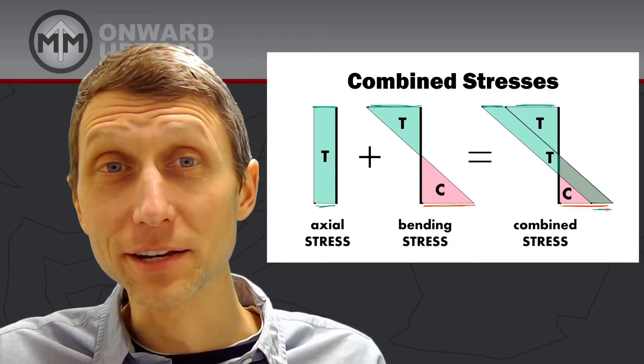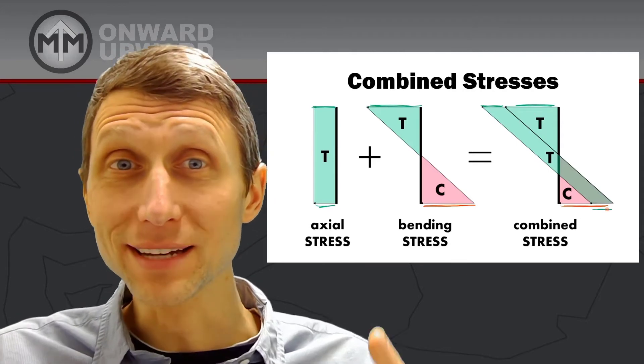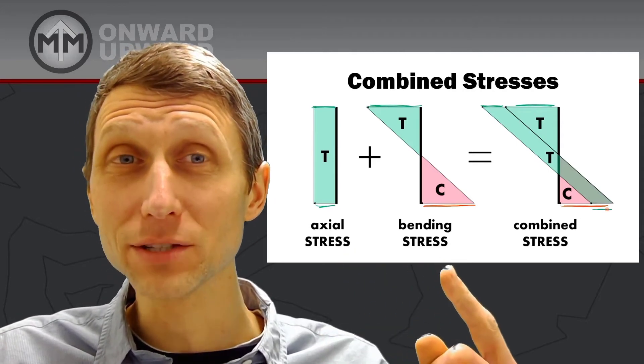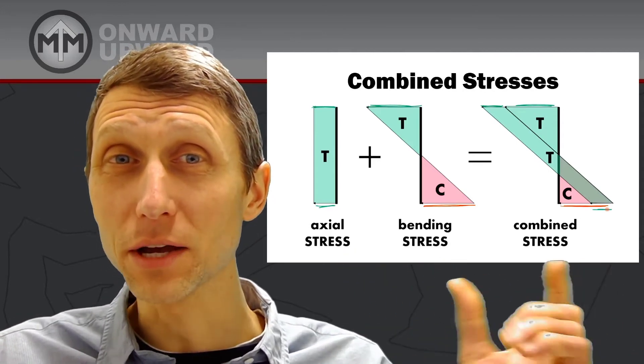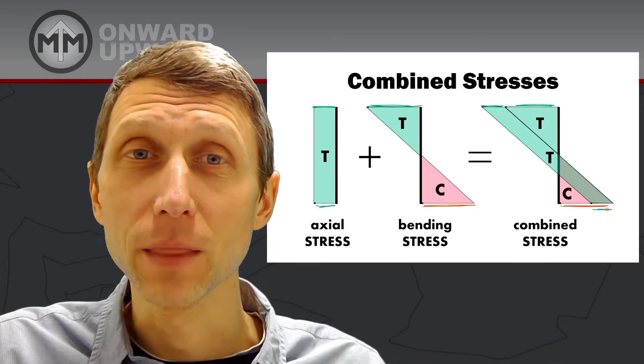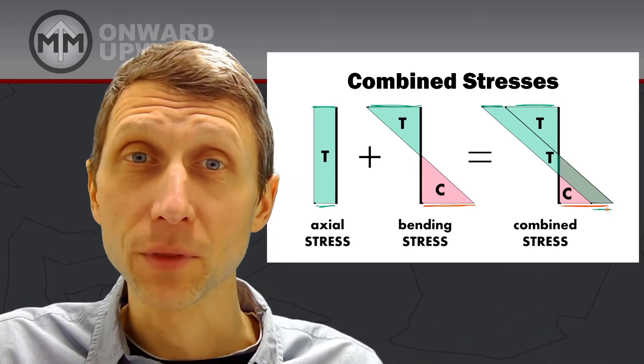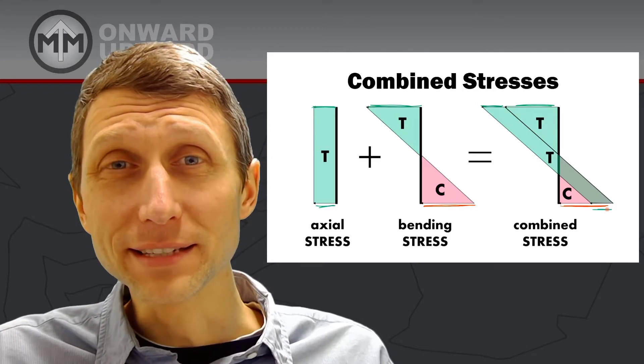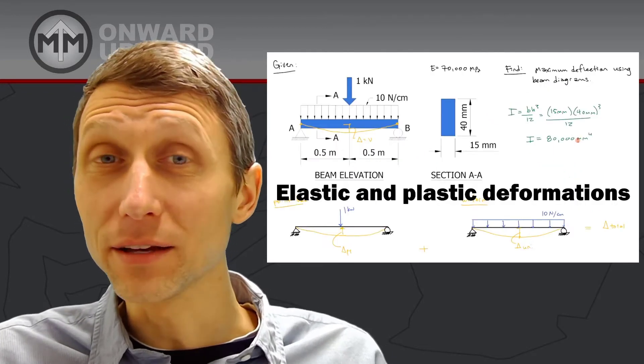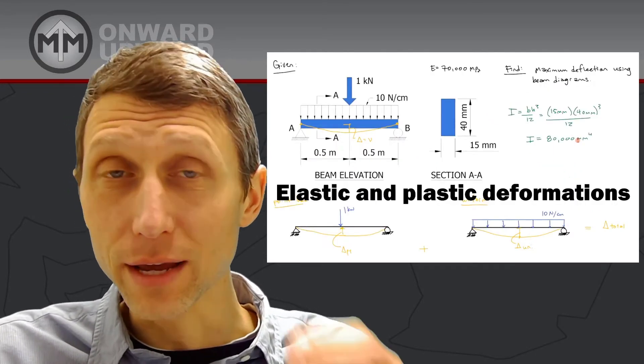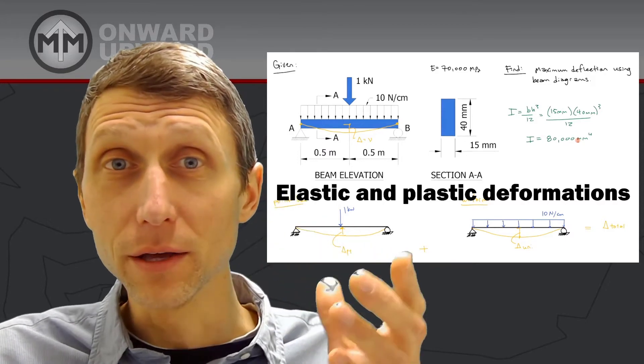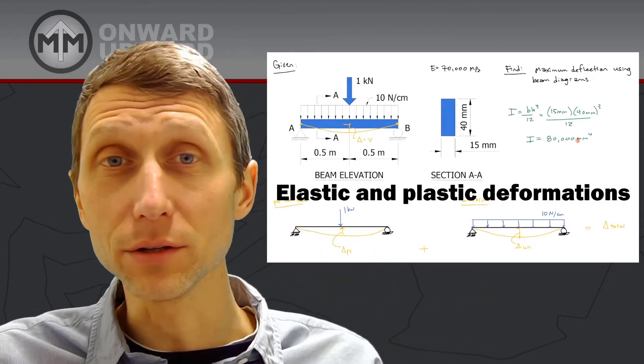You also have to understand combined stresses where you might have both axial stress and bending stress. When you combine those, there are additional effects to consider. All of that gets compared against the yield strength of the material, whether it's steel or aluminum.